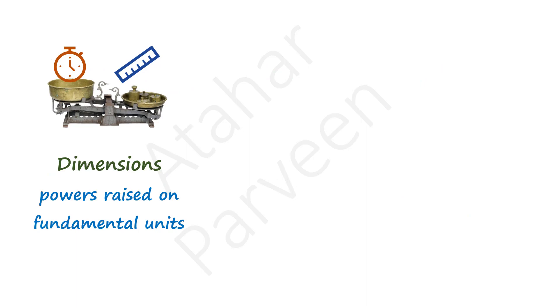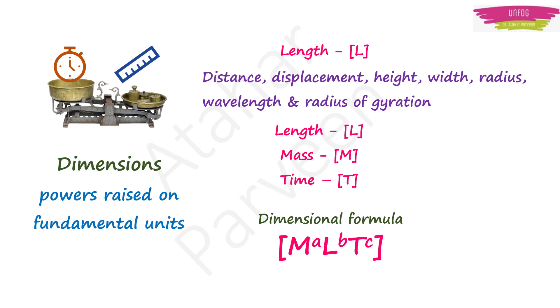Dimensions are the powers raised on fundamental units. For example, the dimension of length is represented as L. You write it in square brackets. So distance, displacement, height, width, radius, wavelength and radius of gyration, they all have same dimension because they are all the measure of length.